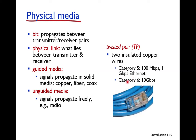Category 6 twisted pair cable can support up to 10 Gigabits per second. For each physical medium there are different connectors. The connector is used to connect the link to a laptop, desktop, or router — for example, the Ethernet connector. For fiber optics, coaxial cable, and wireless, there are different types of connectors for each.